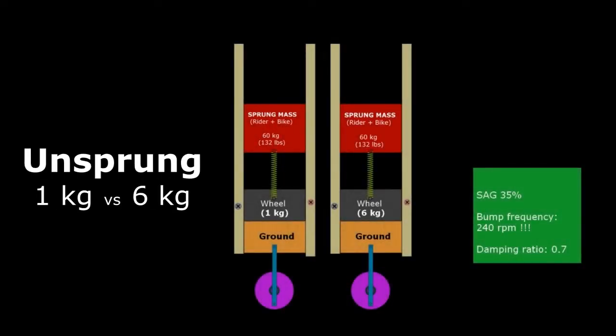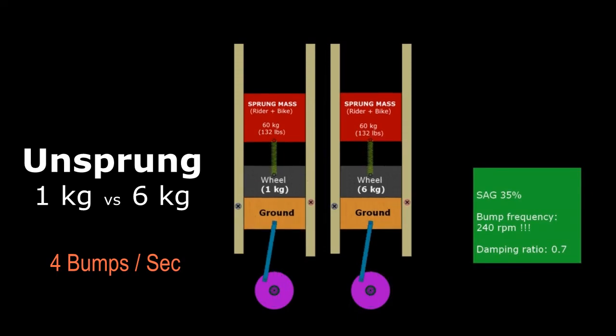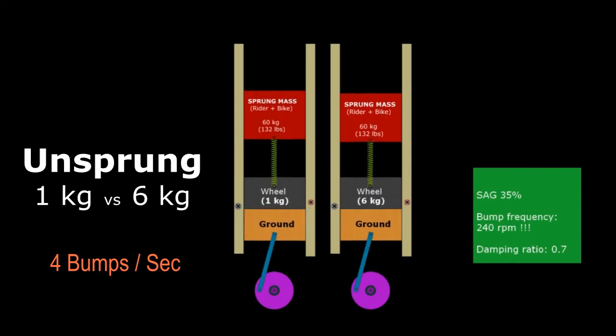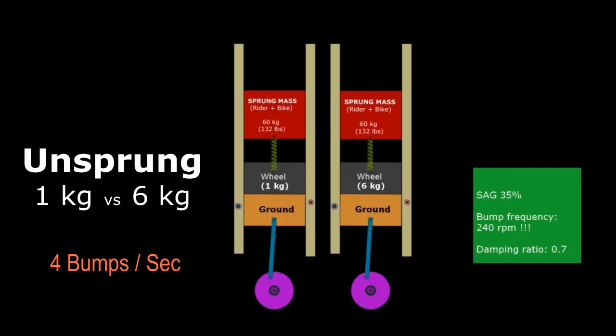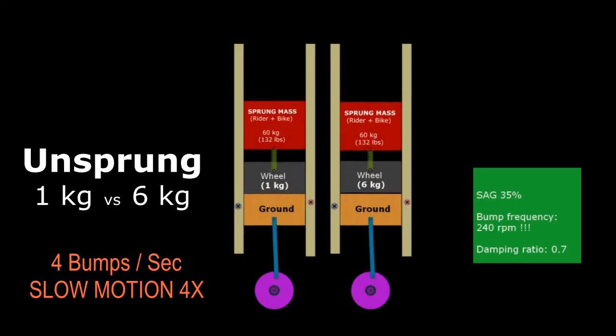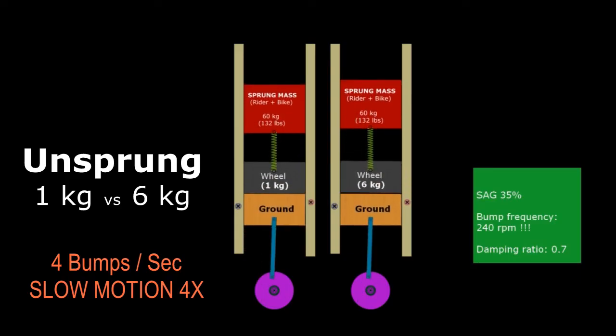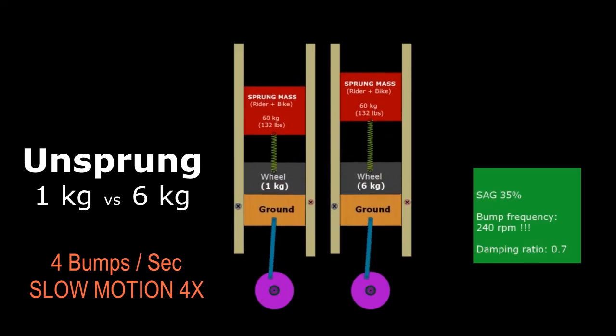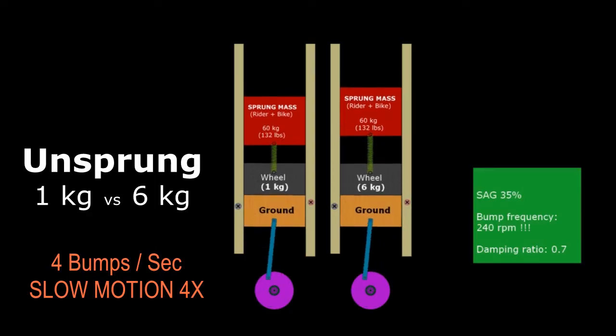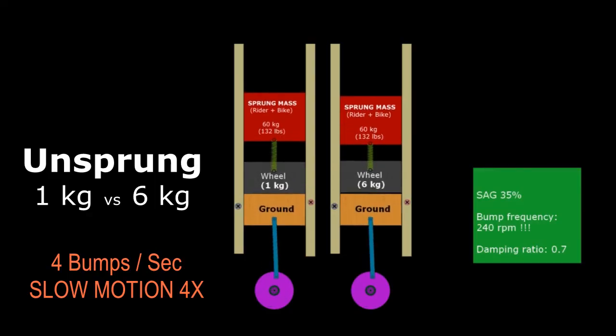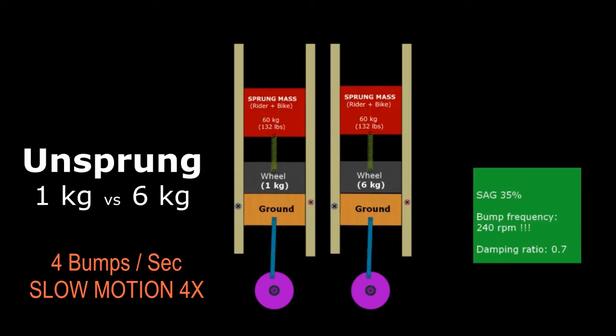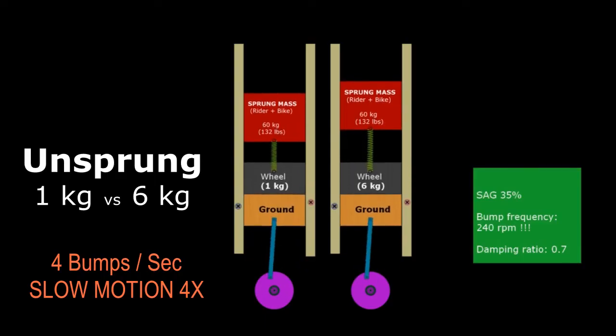And now I'm going to repeat again the same but now using 1 kilogram unsprung weight. This is very unrealistic and very light, obviously, but just for the sake of the simulation. This is real time speed, hard to see the difference. Now with slow motion, four times slow motion. Okay, as you can see, the 1 kilogram wheel tracks much better the ground.